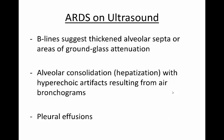With ARDS on ultrasound, there are many different lung pathologies that we can see in patients who fulfill criteria for ARDS. Beelines may suggest thickened alveolar septa, but they can also represent areas of ground glass attenuation, which you might see on a CT scan. Patients with ARDS may also demonstrate areas of alveolar consolidation, which will be seen as hepatization on ultrasound, or hyperechoic artifacts resulting from air bronchograms. Sometimes patients with ARDS may also have pleural effusions.